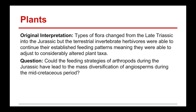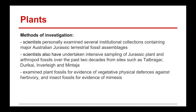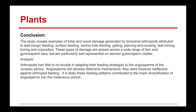The methods of investigation are as follows: scientists personally examined several institutions' collections containing major Australian Jurassic terrestrial fossil assemblages. Scientists also undertook intensive sampling of Jurassic plant-arthropod fossils over the past two decades. Additionally, they examined plant fossils for evidence of vegetative physical defenses against herbivory and insect fossils for evidence of mimesis. The arthropod damage was split into a few types of feeding: leaf margin feeding, surface feeding, lamina hole feeding, galling, piercing and sucking, leaf mining, boring, and oviposition. These types of damage are spread across a wide range of fern and gymnosperm taxa.